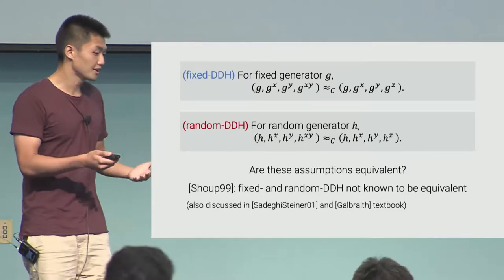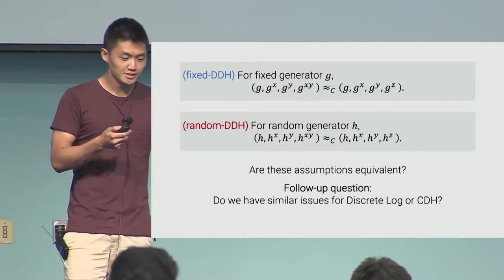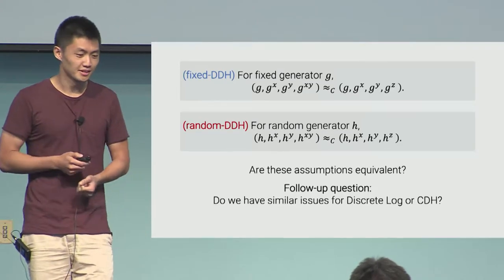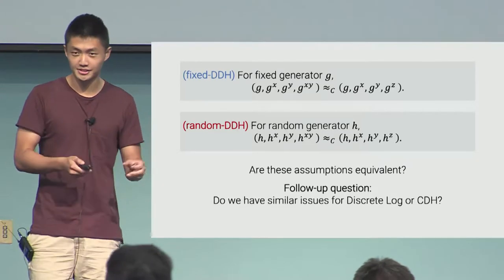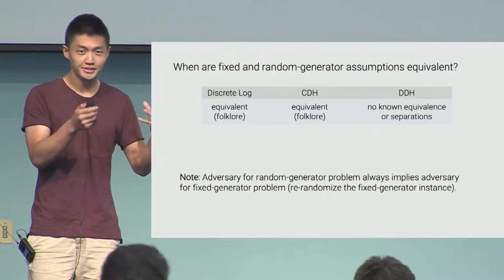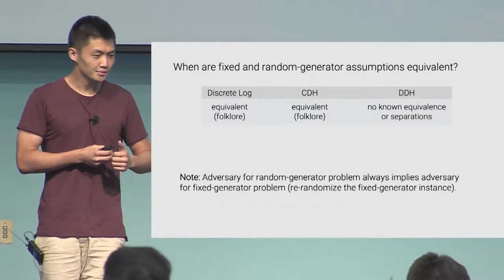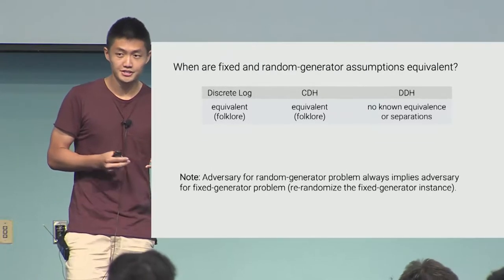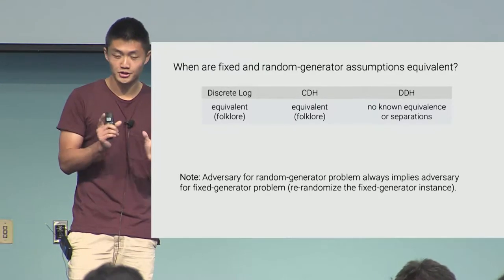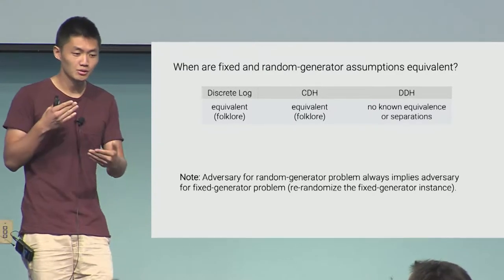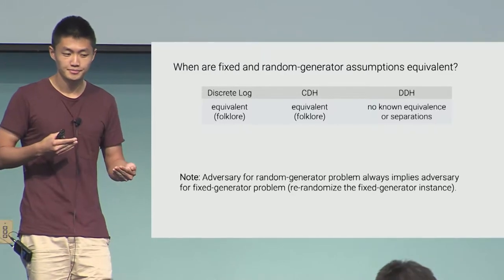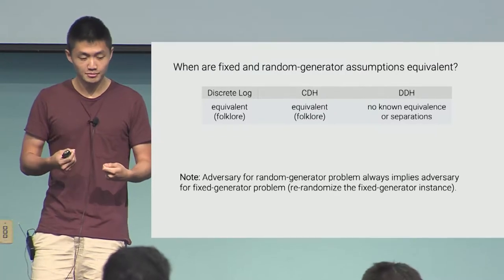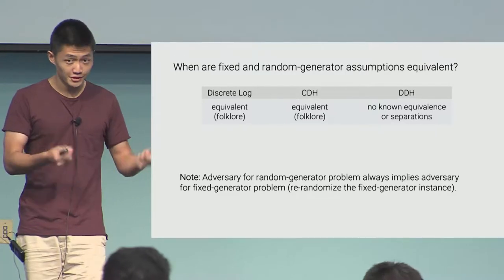This is a slightly concerning state of affairs. You can also ask whether we have similar issues for discrete log or CDH. If you think about it, we don't really have these issues for discrete log and CDH — this seems to be uniquely a DDH problem. So we can ask: when are the fixed and random generator versions of these assumptions equivalent? For discrete log and CDH, there are folklore reductions showing that the fixed and random generator versions are equivalent. But for DDH, we didn't know either equivalence or separations. An adversary for a random generator version of a problem always implies an adversary for a fixed generator version of the problem.